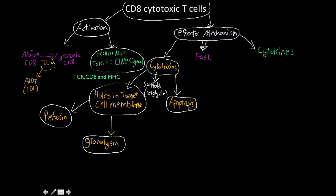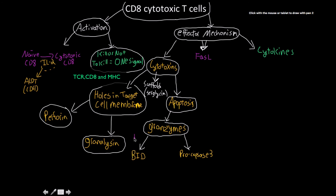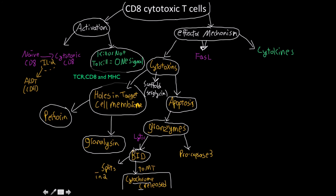Granzymes have two main targets: BID and Procaspase-3. For BID, granzymes cleave it into two halves. One fragment goes to the mitochondria and ultimately results in cytochrome C being released. So one action of granzymes is to cleave BID into two, with one fragment going to the mitochondria to trigger cytochrome C release.